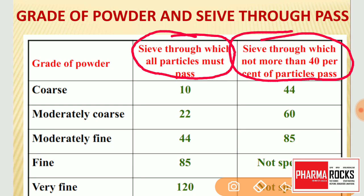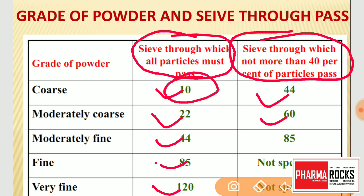Different numbered sieves are available — sieve numbers 22, 44, 85, and 120, and similarly 44, 60, and others. These sieves are available in different grades as per their mesh size. For coarse powder, 100% of the powder must pass through sieve number 10 — it means all particles must pass through sieve number 10.